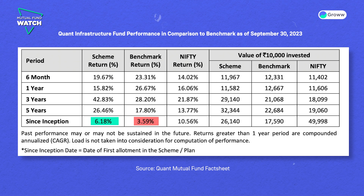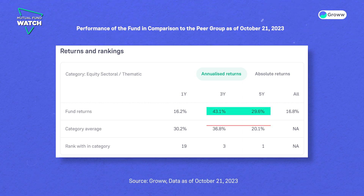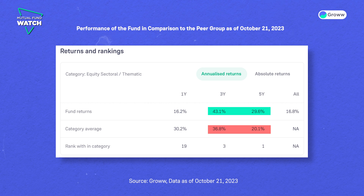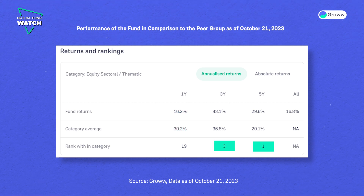Now let's see how the fund has performed in comparison to its peers. You can check the performance on screen compared to the peer group as of 21 October 2023. We can say that the fund has been able to outperform its peers in the long term, but not in the one-year period. The fund has received rankings of third and first in the three-year and five-year periods respectively.